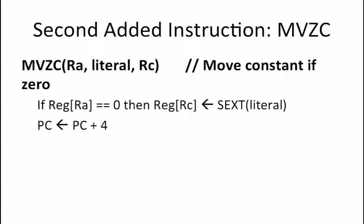The second instruction that we want to add to our beta is a MOVZC instruction, which is a move-constant-if-zero instruction. The way this instruction works is that if the contents of register RA equals 0, then the sign-extended version of the literal constant will be loaded into register RC. This is followed by incrementing the PC to point to the next instruction.